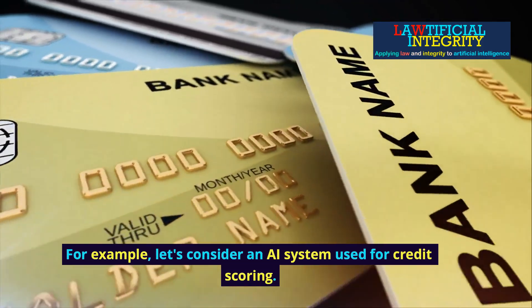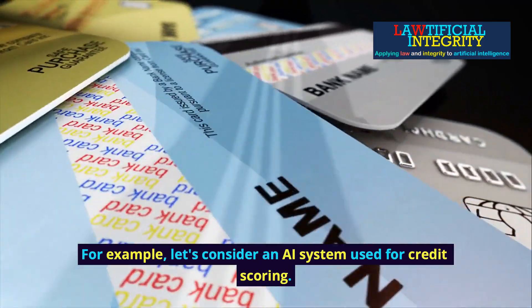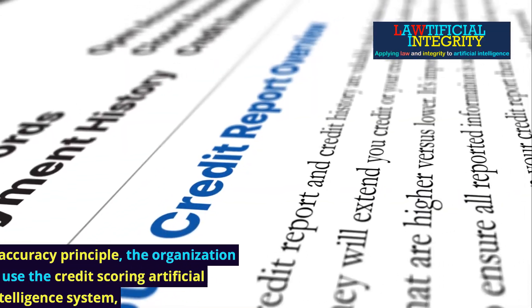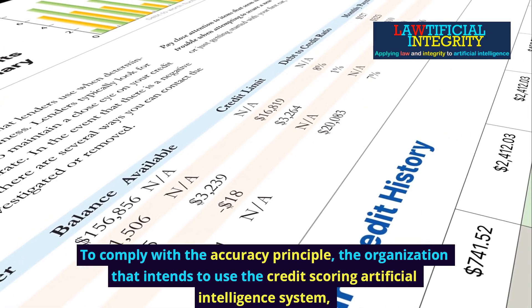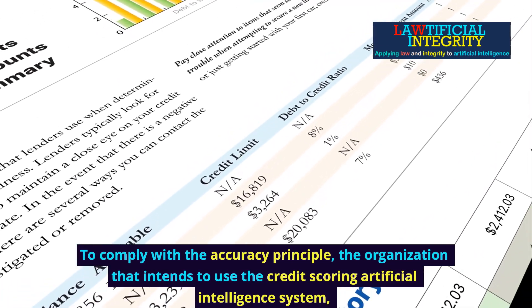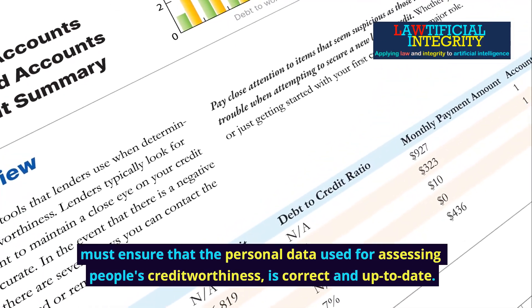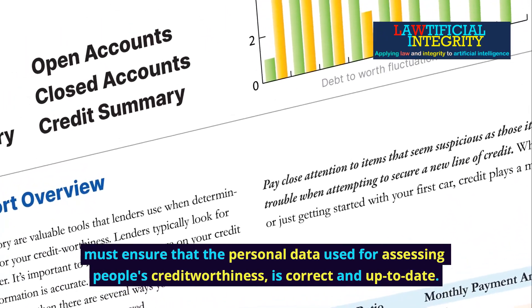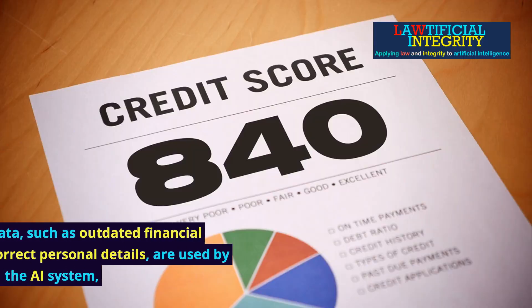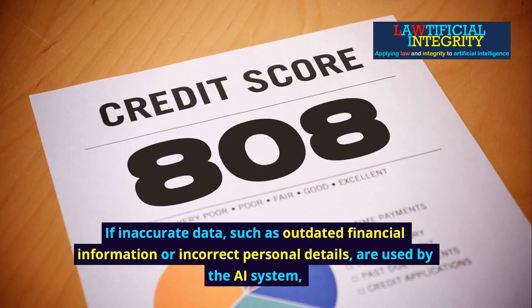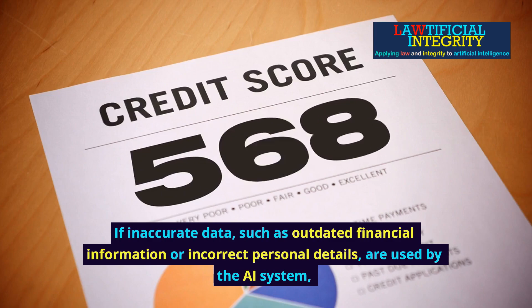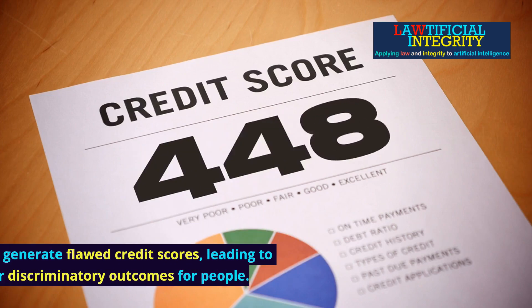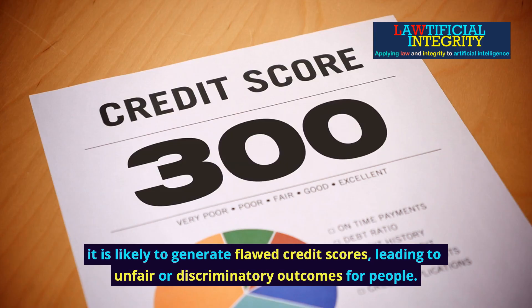For example, let's consider an AI system used for credit scoring. To comply with the accuracy principle, the organization that intends to use the credit scoring AI system must ensure that the personal data used for assessing people's creditworthiness is correct and up to date. If inaccurate data, such as outdated financial information or incorrect personal details, are used by the AI system, it is likely to generate flawed credit scores, leading to unfair or discriminatory outcomes for people.